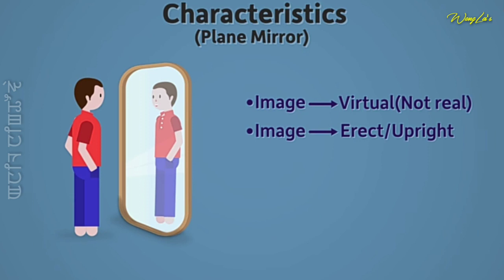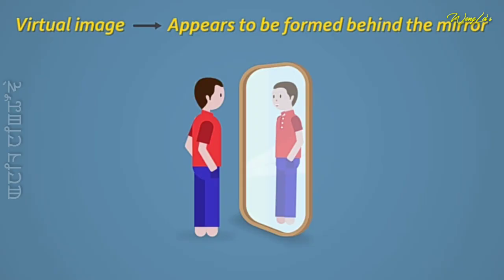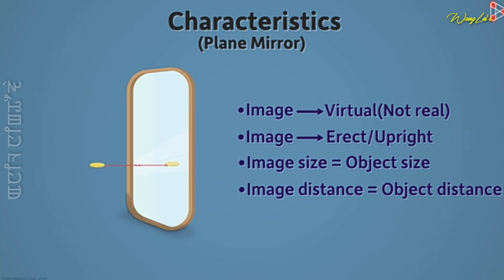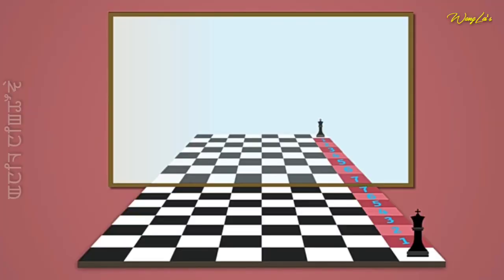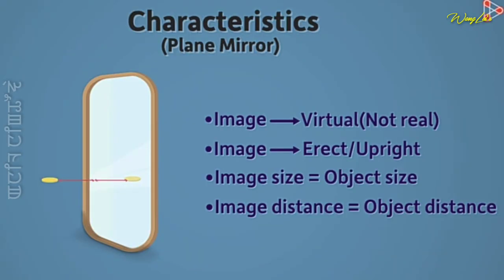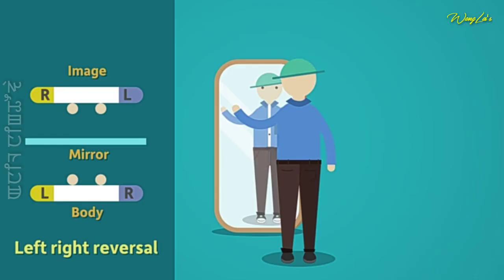The image in a plane mirror is always virtual and erect. The image is not a real image — it is very difficult to identify. The image size and object size are the same in a plane mirror. The image sizes have been shown in the mirror. The object is accurately inverted laterally, so this is not a real object inversion.